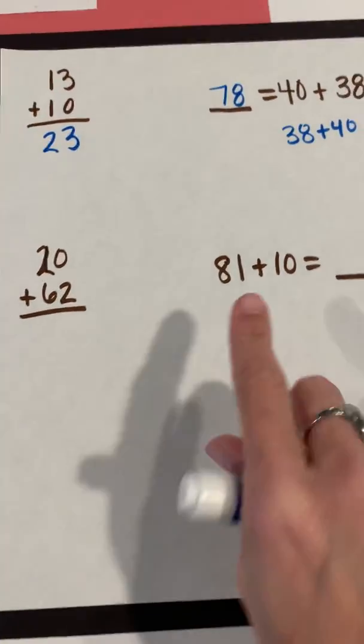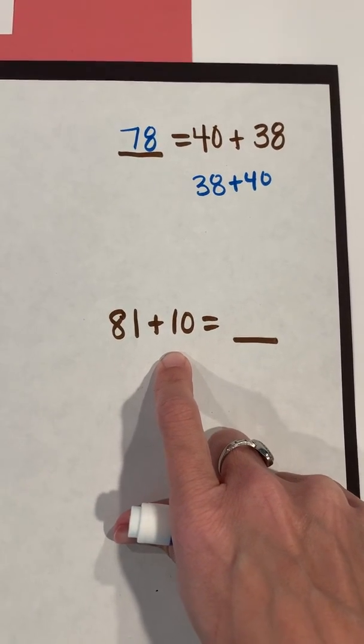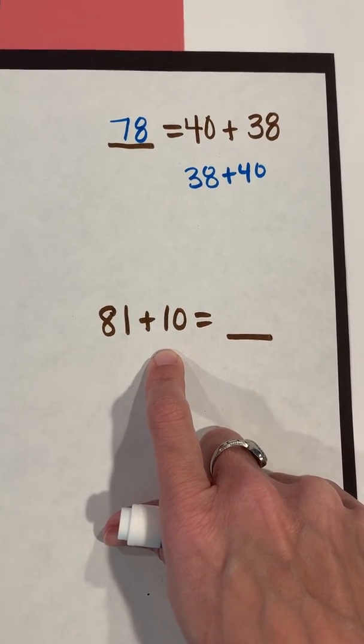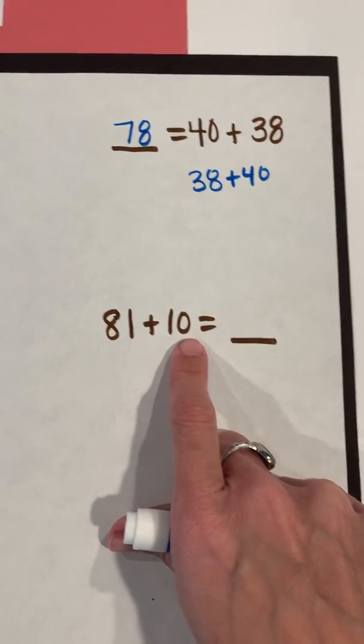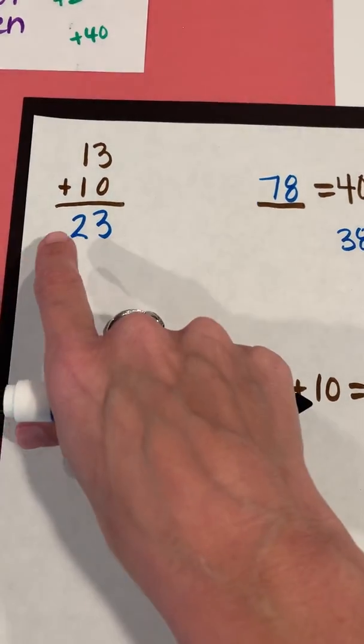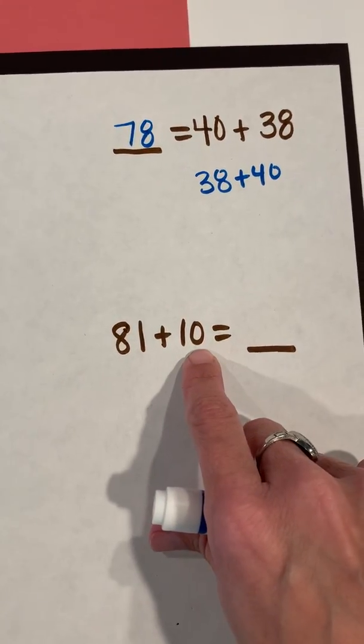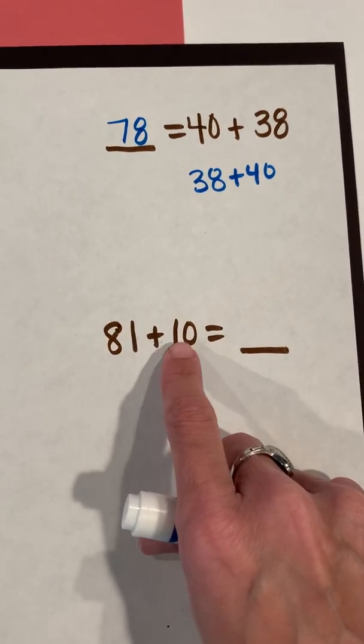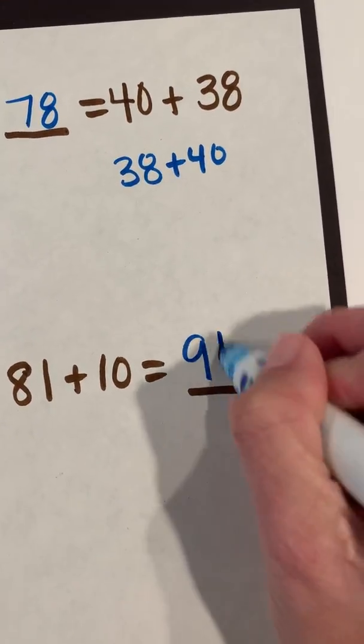So let's look here. We're going to start with 81 plus 10. I want you to close your eyes and picture that hundreds chart you've seen since kindergarten in your head. I want you to find 81 on that hundreds chart. Think of where 81 would be. And if we were to add 10, think back what happened when we added 13 plus 10. The only digit that changed was the digit in the tens place. We went from 13 to 23. So if we're at 81 and we're adding on 10, the only digit that's going to change is the digit in the tens place. And remember, we're just adding on one 10, so we're just moving down one level, which gives us 91.